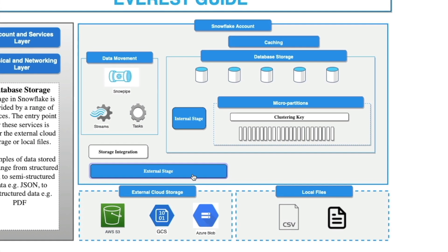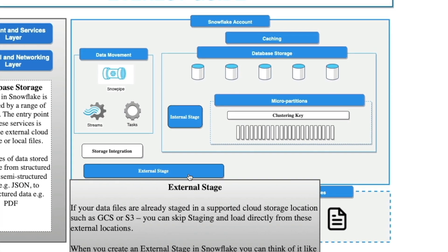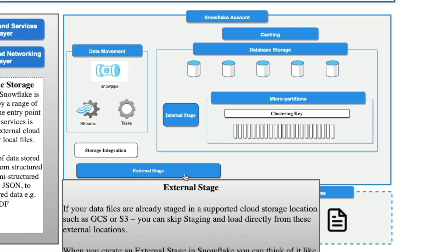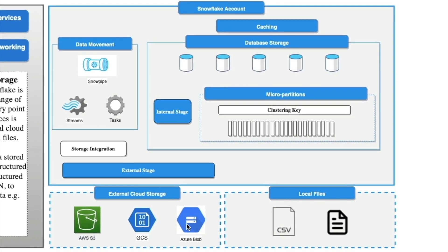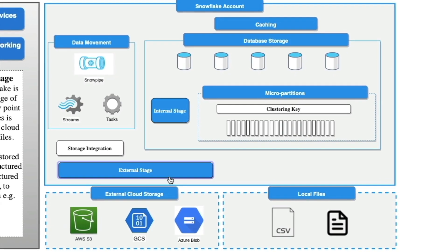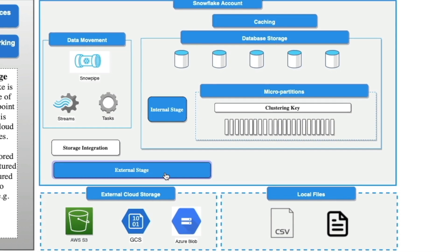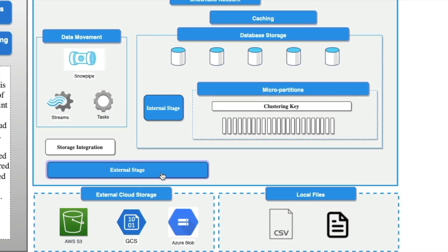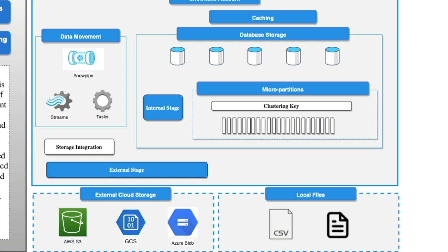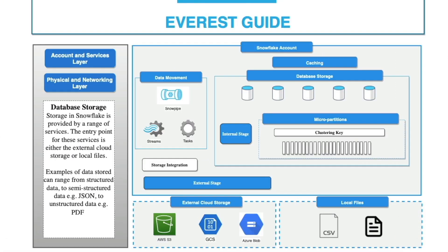The other option is to create an external stage, which allows you to place your files in an external location — this could be Amazon S3, Google Cloud Storage, or Microsoft Azure Blob. The external stage effectively acts as a pointer and contains the location and credential information required to access your files within that external cloud storage location. If you have your unstructured data within Amazon S3, you'll need to create an external stage in Snowflake pointing to the files.